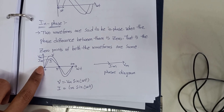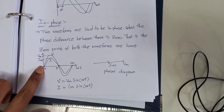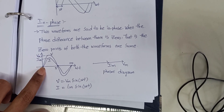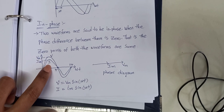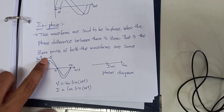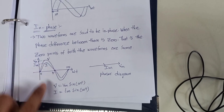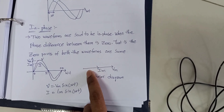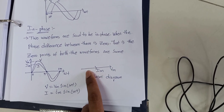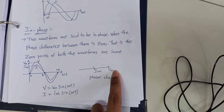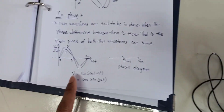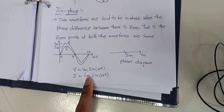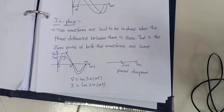The voltage source starts from zero point and the current source also starts from zero point. At 90 degrees both current and voltage reach their peak value. In the phasor diagram for in phase, both the current value and voltage value are represented on the same line. The formulas are: V = Vm sin(ωt) and I = Im sin(ωt).